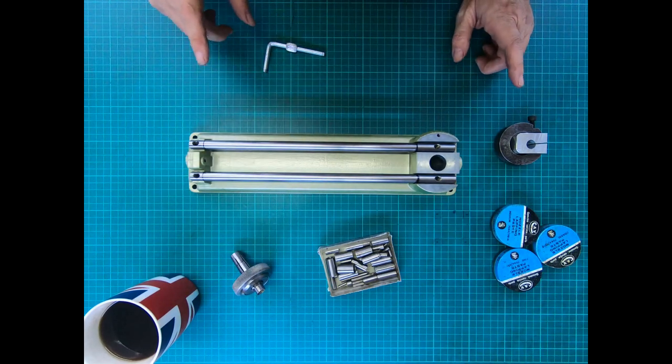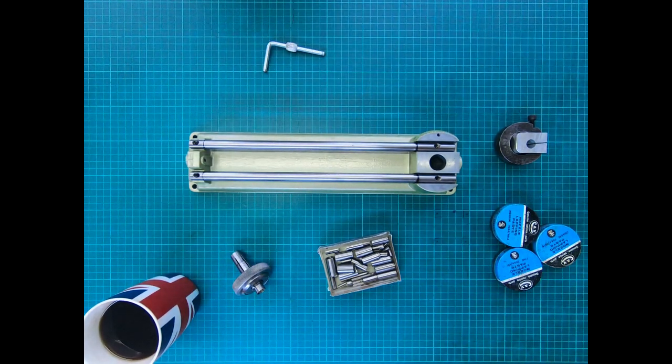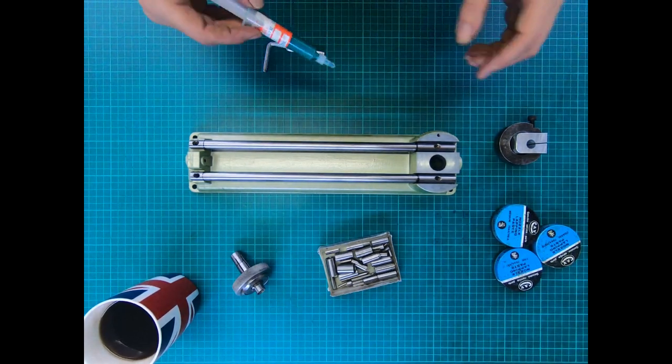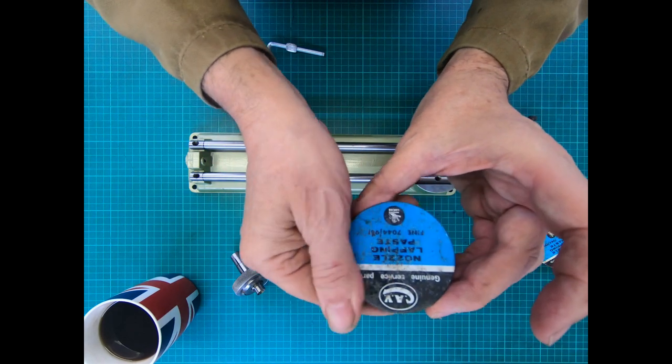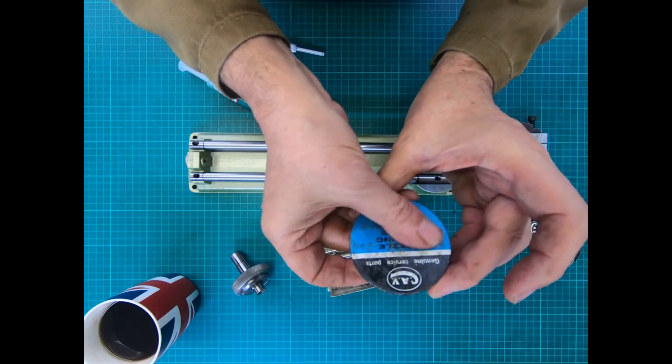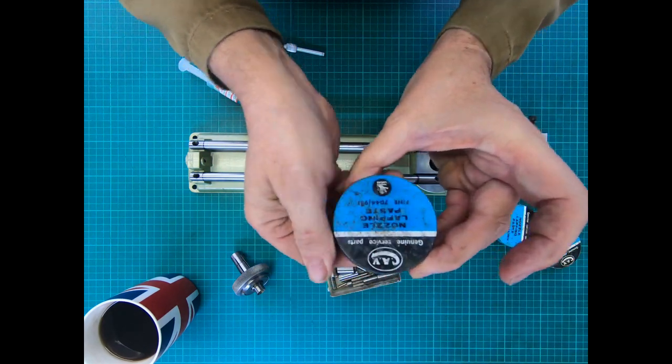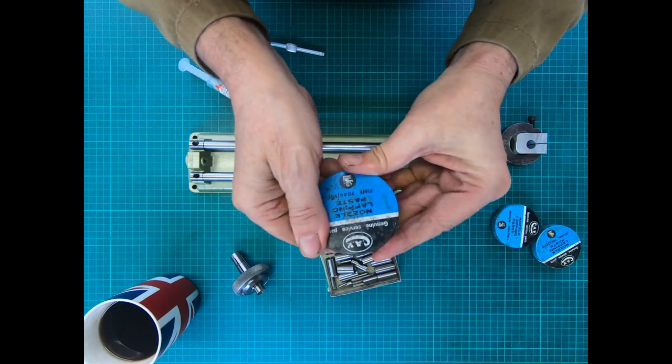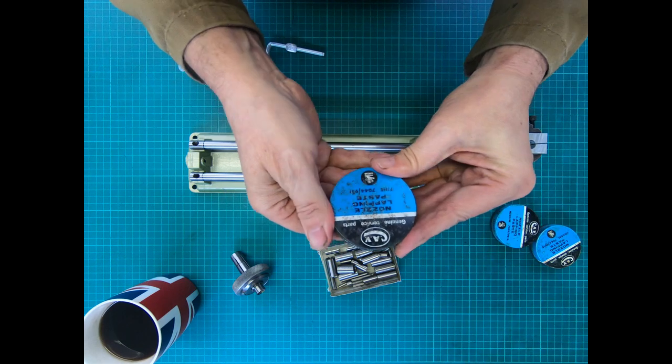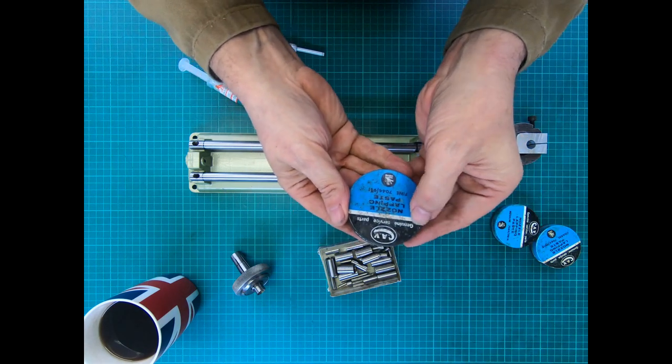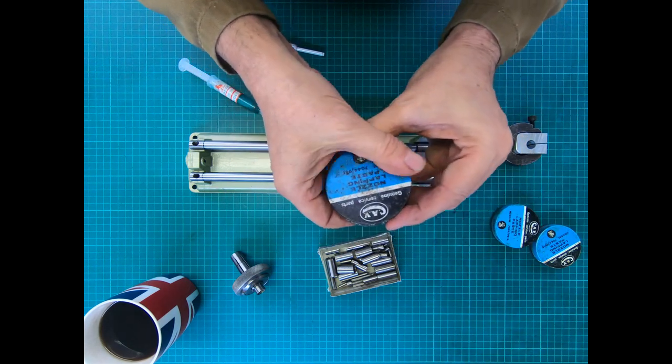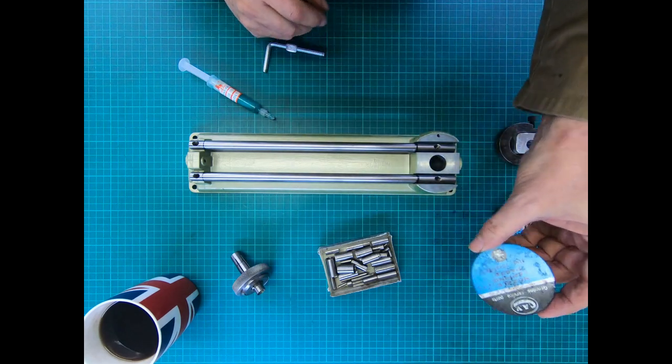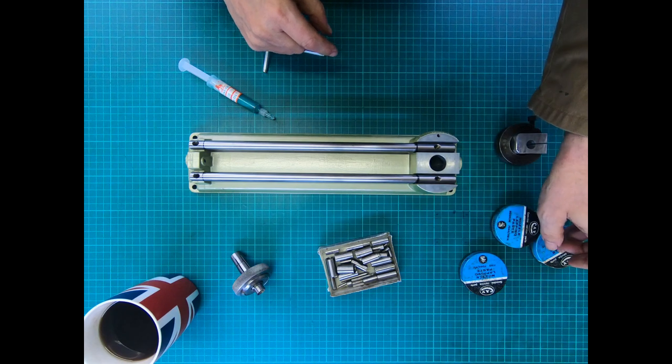So that's good. One thing, let me show you—I originally was going to use this old nozzle lapping paste. So this is from CAV. Many moons ago I used to calibrate fuel pumps, so we would do the actual fuel pumps and the injectors, and there were three: fine, medium and coarse.